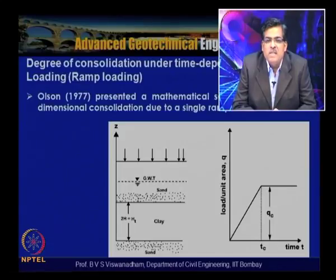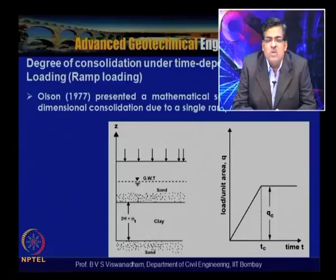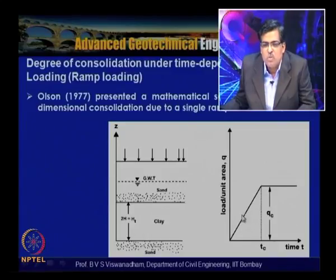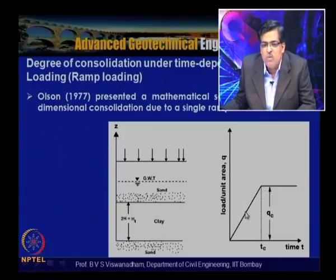Olson (1977) presented a mathematical solution for one-dimensional consolidation due to a single ramp load, where the load increases linearly with time during the construction period tc, then remains constant at qc. For staged construction with multiple stages (qc1, qc2, qc3 summing to qc), this can be approximated by a single ramp if the stages follow the same overall slope.